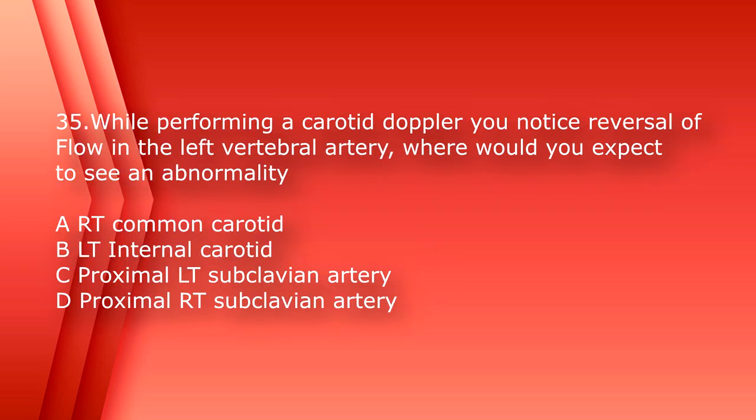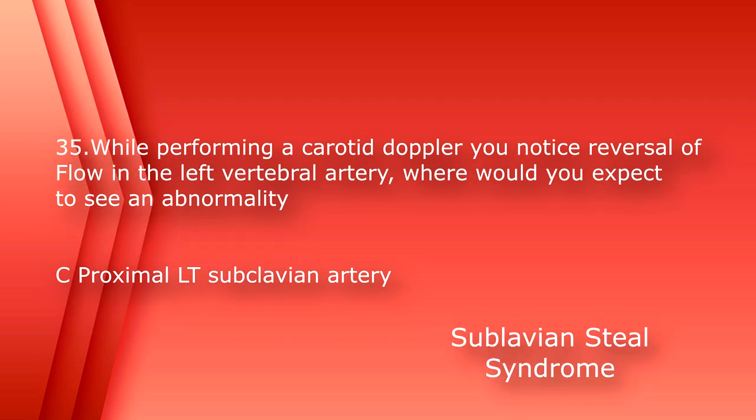Number 35: while performing a carotid Doppler, you notice reversal of flow in the left vertebral artery. Where would you expect to see an abnormality? A. Right common carotid, B. Left internal carotid, C. Proximal left subclavian artery, or D. Proximal right subclavian artery. The answer is C, proximal left subclavian artery.